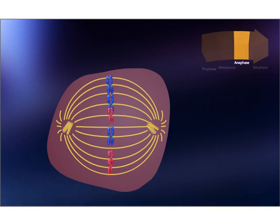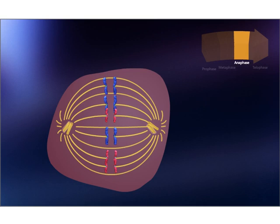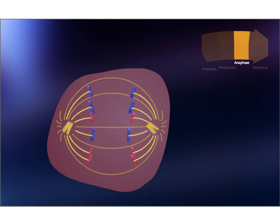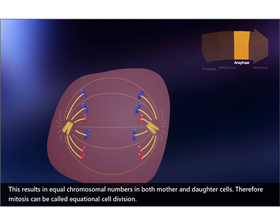Anaphase begins with the degradation of proteins that hold the sister chromatids together. Thus chromosomes are divided and daughter chromosomes are formed. Daughter chromosomes are pulled to the opposite poles of the cell. This results in equal chromosomal numbers in both mother and daughter cells. Therefore, mitosis can be called equational cell division.